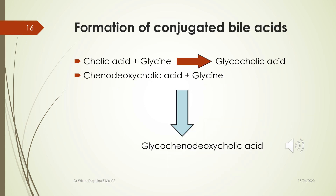Conjugated bile acids are required for the synthesis of bile salts. They are obtained by conjugation of glycine with the bile acids cholic acid and chenodeoxycholic acid to form glycocholic acid and glycochenodeoxycholic acid respectively.